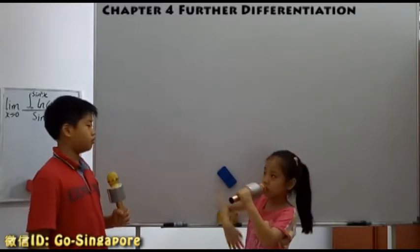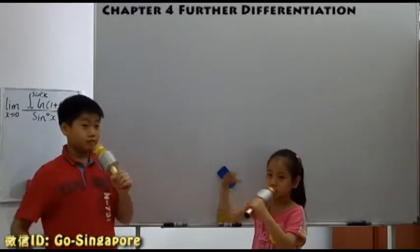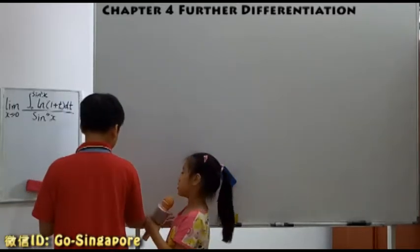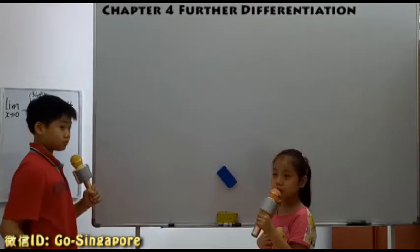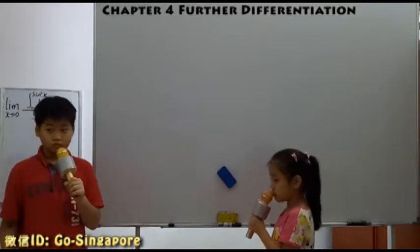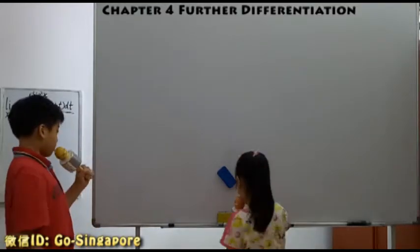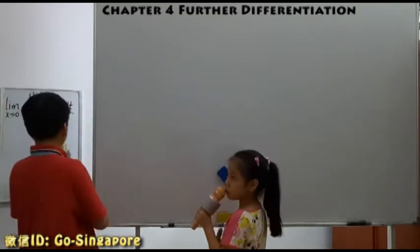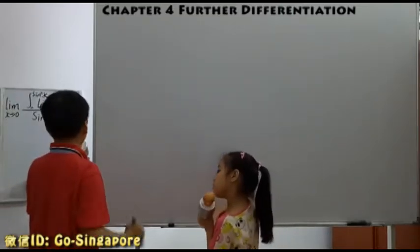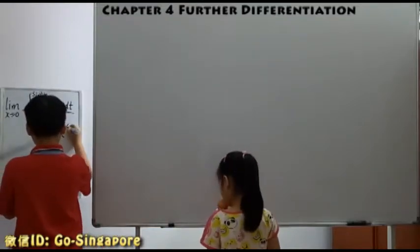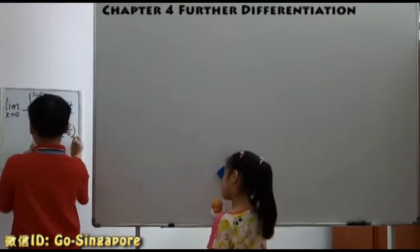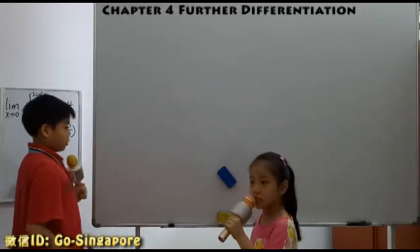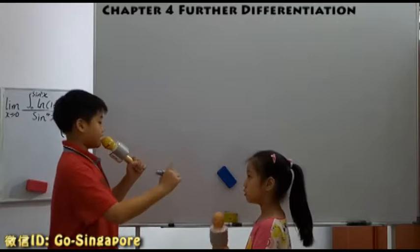Chapter 4, Further Differentiation. We will start this question. I will use one method, you will use one method. I first start. Wait, this question - is it a determinable form? No, it is an indeterminable form. Which? Which kind? Zero over zero. Can we apply L'Hôpital's rule? Yes, we can.